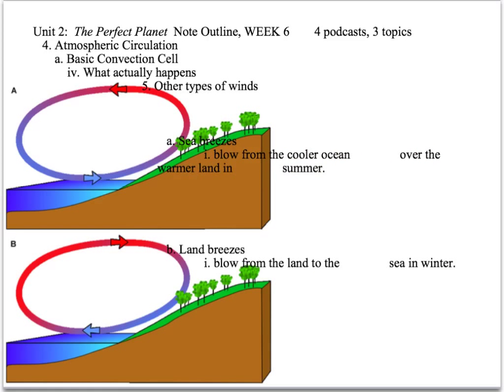Next up are sea breezes and land breezes. It all depends on whether it's winter or summer — basically, where the warm air is and where the cold air is. In the summer, shown at the top, you've got land that's warm and sea that's cold. A sea breeze is when the air cools over the ocean and then blows onto the land, cooling the land. So the land near the ocean is going to be cooler in the summer because the ocean is cooling it.